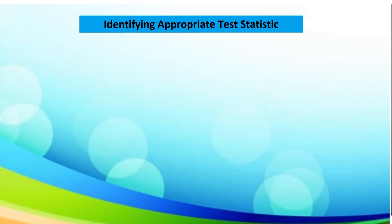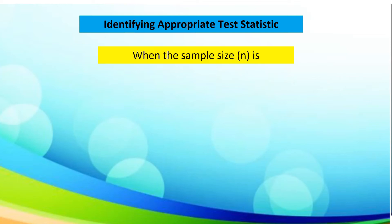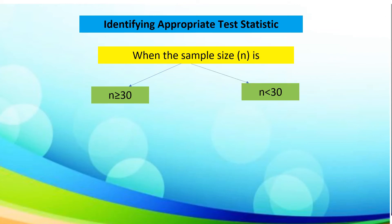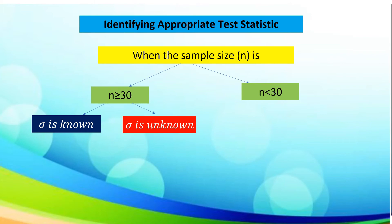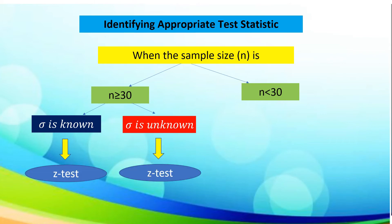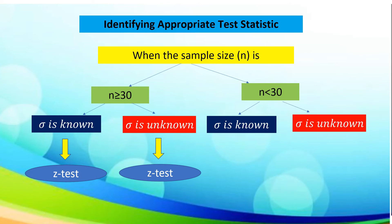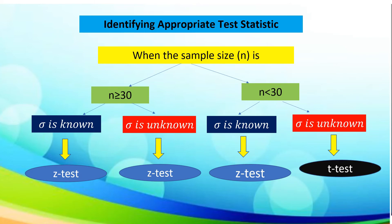Now, let us use this diagram to identify the appropriate test statistic given the sample size. When the sample size is greater than or equal to 30, whether the population standard deviation is known or unknown, we may use z-test. While if the sample size is less than 30, given that the population standard deviation is known, we are going to use z-test. On the other side, if it is unknown, we are going to use t-test, provided that the given standard deviation of the sample will be used.